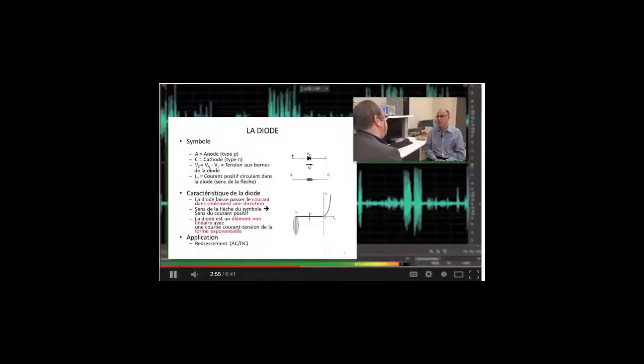Mais quelles sont les applications courantes de cette diode ? Les applications des diodes sont nombreuses, dépendamment du type de diode. Il y a principalement trois types de diodes qu'on va étudier dans ce cours : la diode à jonction, la diode Zener, et la diode électroluminescente qu'on appelle le DEL ou bien le LED. Si on regarde la jonction PN comme application, on peut penser au redresseur. Si on a un signal alternatif, on aimerait avoir un signal continu. On peut prendre comme exemple les convertisseurs AC-DC pour charger les iPod ou les iPads.